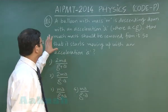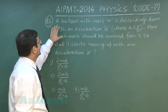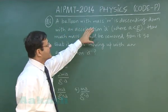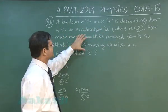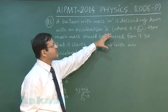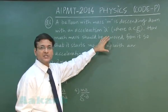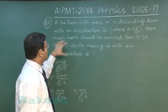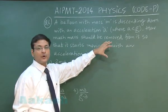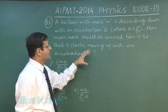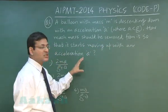In question number 6, a balloon with mass m is descending down with an acceleration a, where a is less than acceleration due to gravity. How much mass should be removed from it so that it starts moving up with an acceleration a?